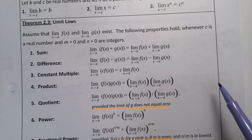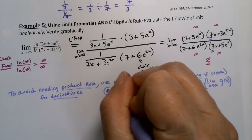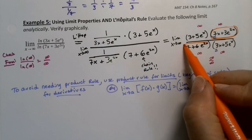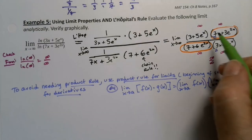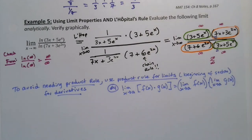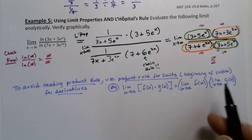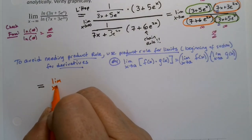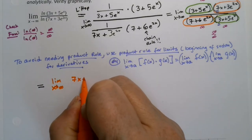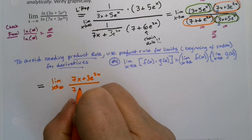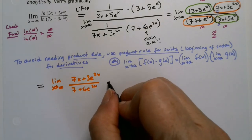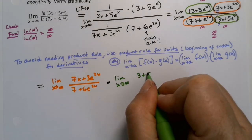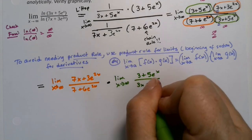Which ones am I going to put together? I'll put the two that have sevens together because I think they'll cancel nicely, and similarly the two with threes together. According to the product rule for limits, this equals: the limit as x goes to infinity of (7x + 3e^(2x)) / (7 + 6e^(2x)), multiplied by the limit as x goes to infinity of (3 + 5e^x) / (3x + 5e^x).